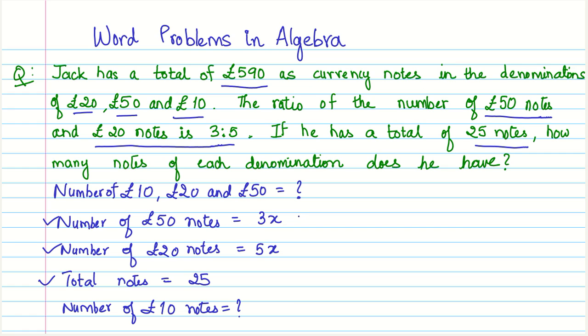We have the number of £50 notes, £20 notes and I know the total number. In that case what I can do is simply subtract the total number of £50 and £20 notes and that gives us the £10 notes. That we can write as total number of 25 minus 5x plus 3x, which gives us 25 minus 8x. So this is your number of £10 notes.